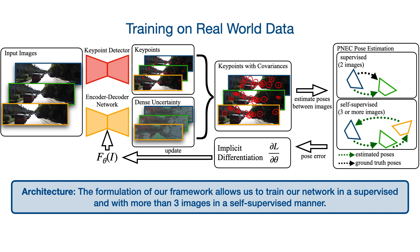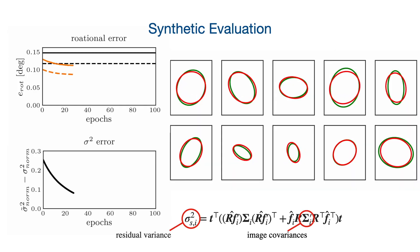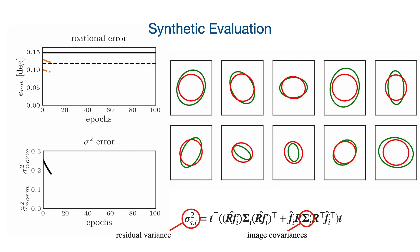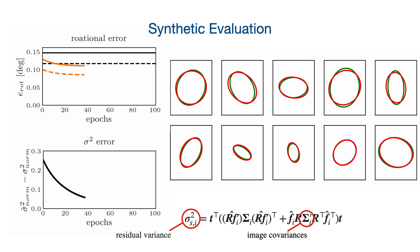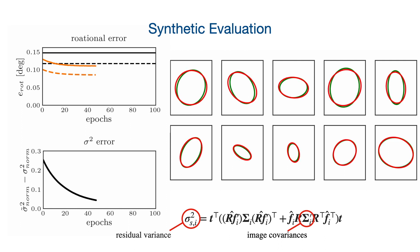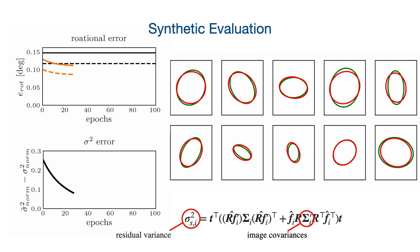This enables our framework to be trained fully self-supervised without the need for ground truth pose information. We evaluate the gradient obtained from implicit differentiation in synthetic experiments to demonstrate its capability to derive meaningful covariance estimates. For this, we sample individual pose estimation problems using a known noise distribution for keypoints in an image plane. Starting from an estimate of uniform noise distributions, we update our noise estimates directly using the gradient. The experiments show that following this gradient leads to a lower pose estimation error and correctly identified noise distributions in the image plane.